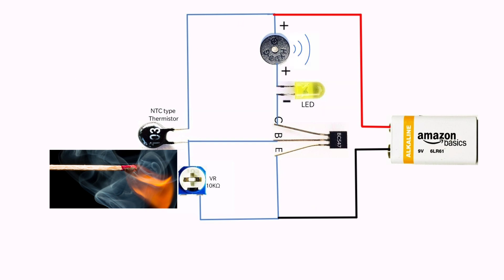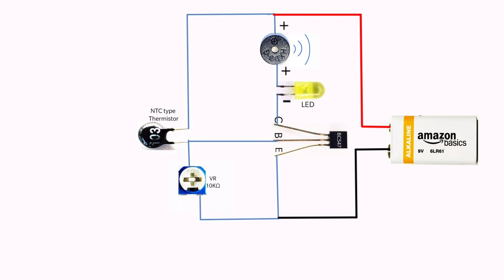And the transistor will get the base current to switch on the buzzer and LED. And in normal position, the thermistor will have high resistance so that there is no base current in the transistor. So it remains off. You can adjust the sensitivity of the thermistor using the variable resistor.